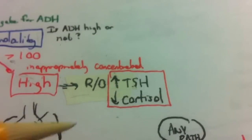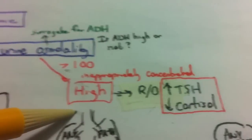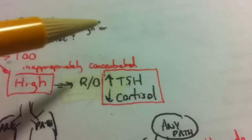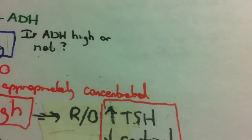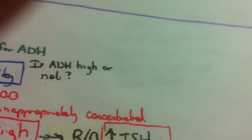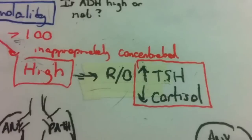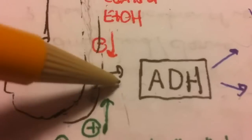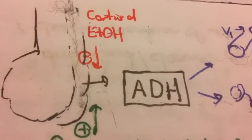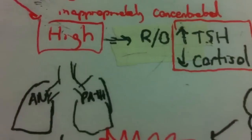Hypothyroidism — I'm not entirely sure why — can cause inappropriate ADH; I just know hypothyroidism can cause pretty much anything. Hypocortisolism can also cause inappropriate ADH because cortisol inhibits the release of ADH, so when cortisol goes low, ADH goes high. Sorry for the brief interruption — we had a battery issue.